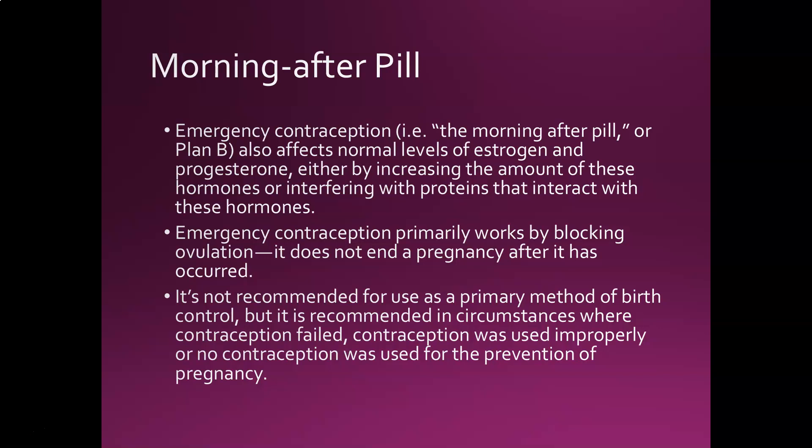Now let's talk about the morning-after pill — emergency contraception. Plan B is sold over the counter in pharmacies without a prescription. It affects your levels of estrogen and progesterone, usually by increasing them, or some versions interfere with proteins that interact with the hormones. The primary way it works is thought to be blocking ovulation — giving your body the signal that it's looking for pregnancy before ovulation happens. But if you waited too long and ovulation and fertilization have already occurred, it won't guarantee ending the pregnancy.